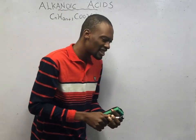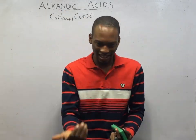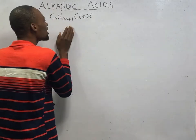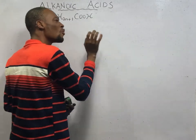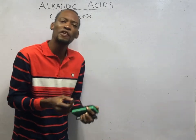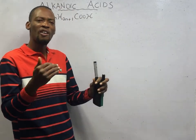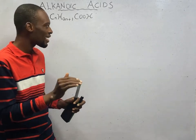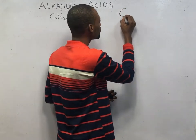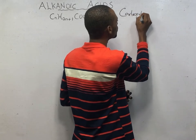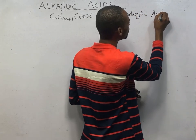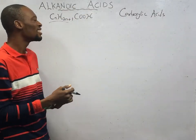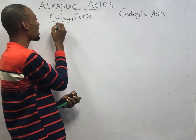Alkanoic acids are simply organic acids with the general formula CₙH₂ₙ₊₁COOH. This is the general formula for alkanoic acids, also called carboxylic acids.